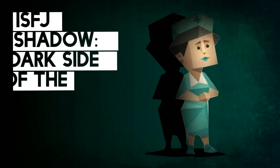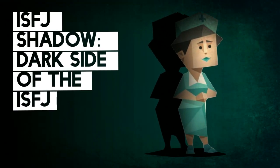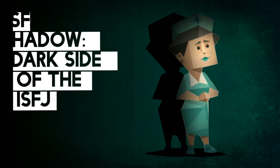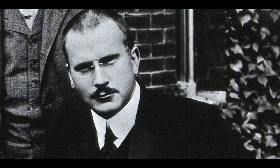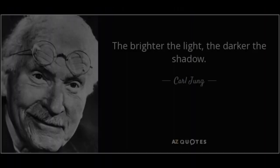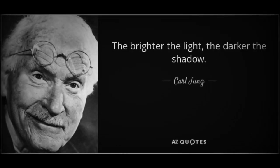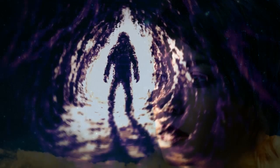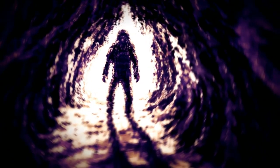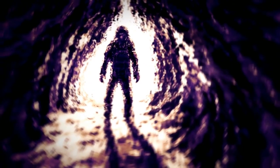The ISFJ Shadow: the dark side of the ISFJ personality type. The shadow is a concept introduced by Swiss psychologist Carl Jung. It represents what Jung believed to be the unconscious and repressed aspects of our personality that operate beneath our conscious awareness.